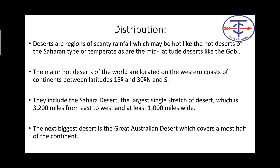First, let's understand the distribution. A desert is defined as an area where rainfall is less than 25 cm. Deserts can be hot deserts or cold deserts. Cold deserts are found in middle latitude temperate areas, like the Gobi Desert and the Patagonian Desert.